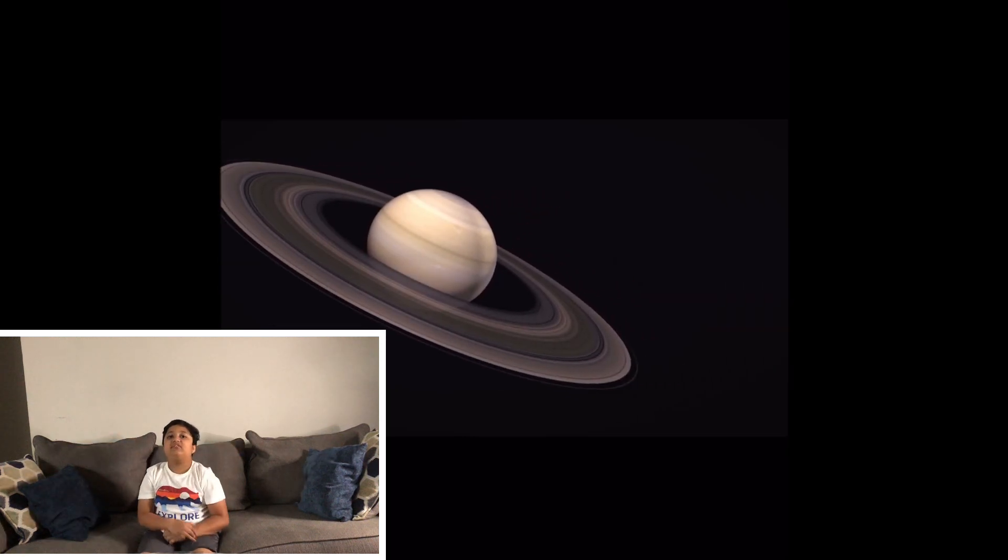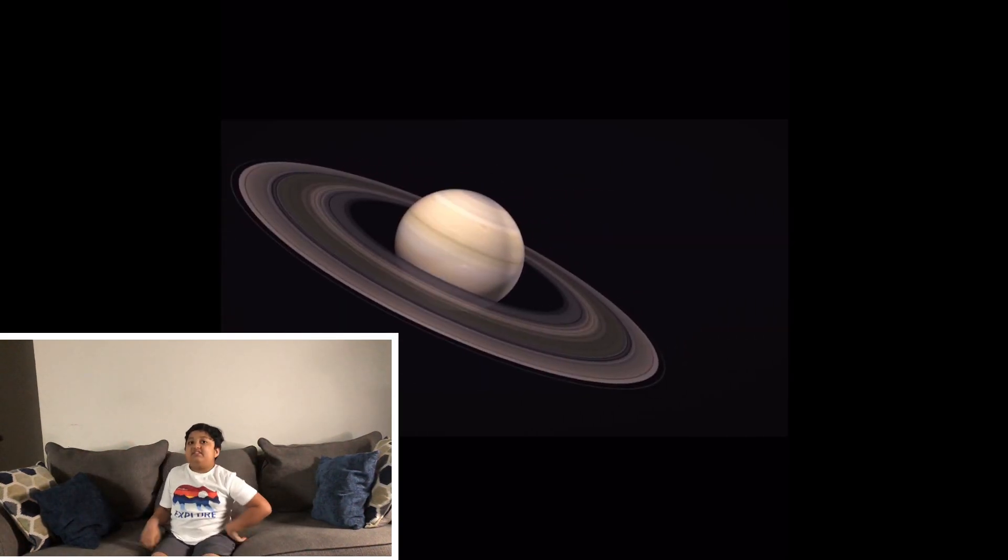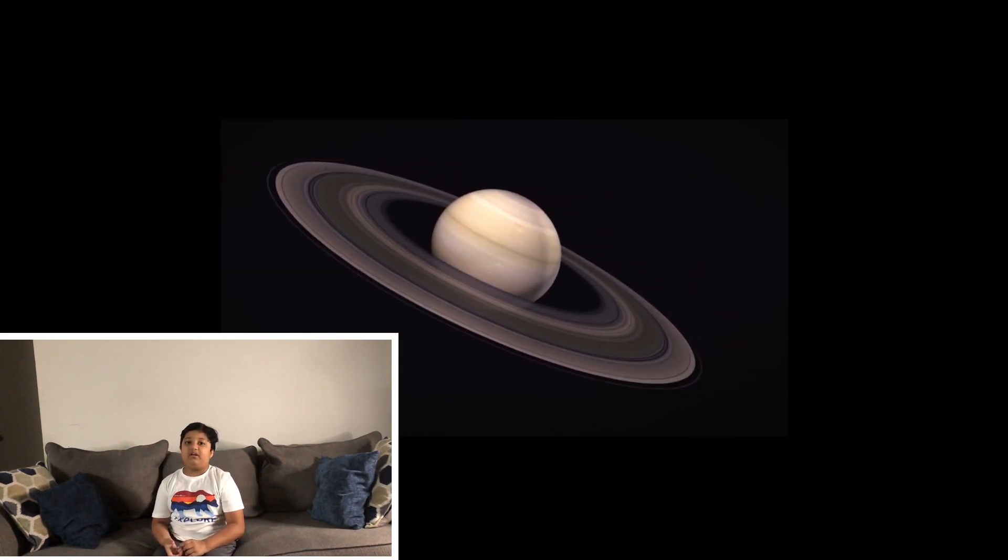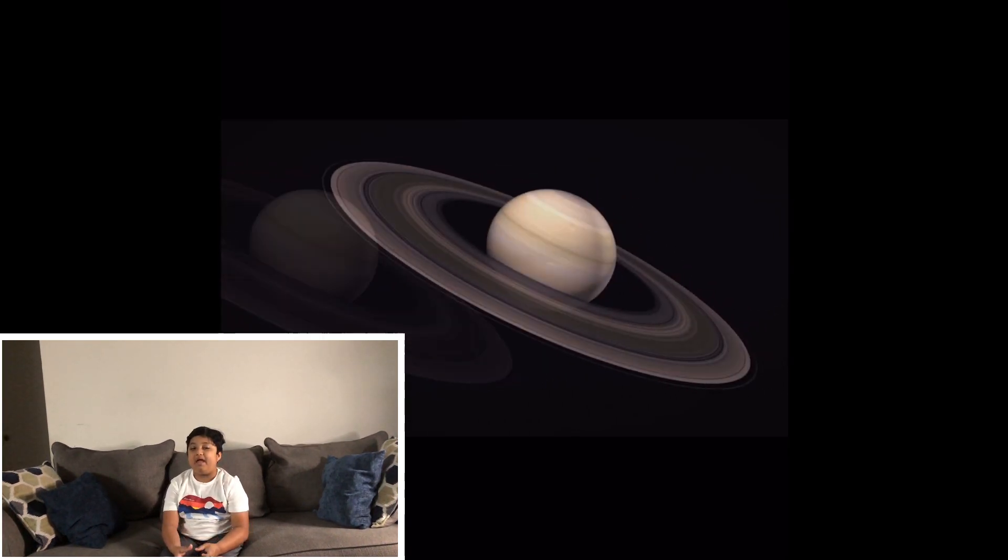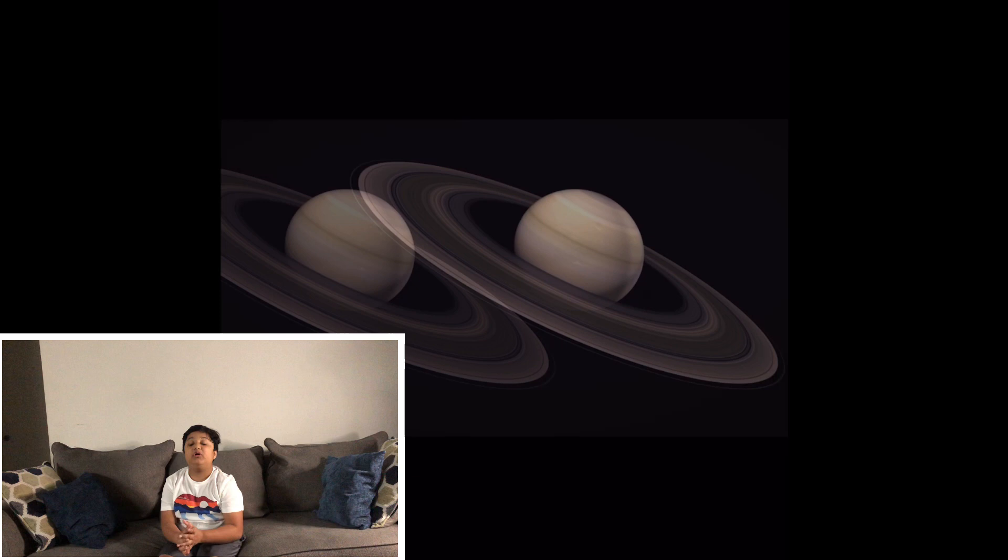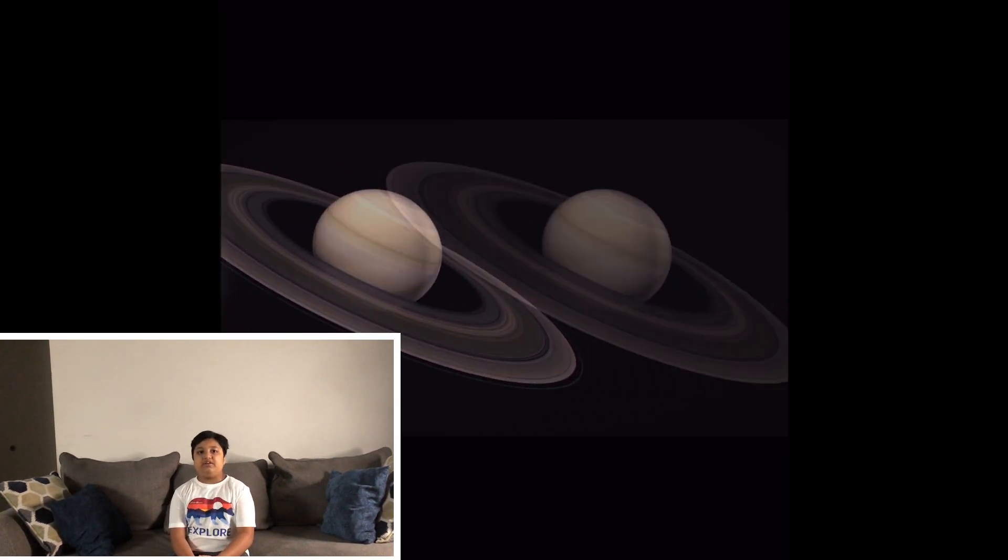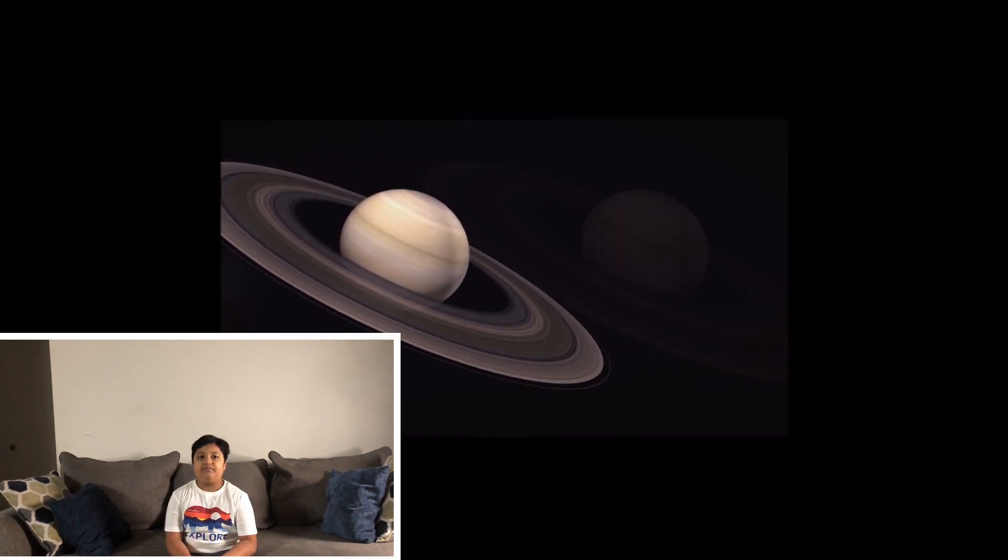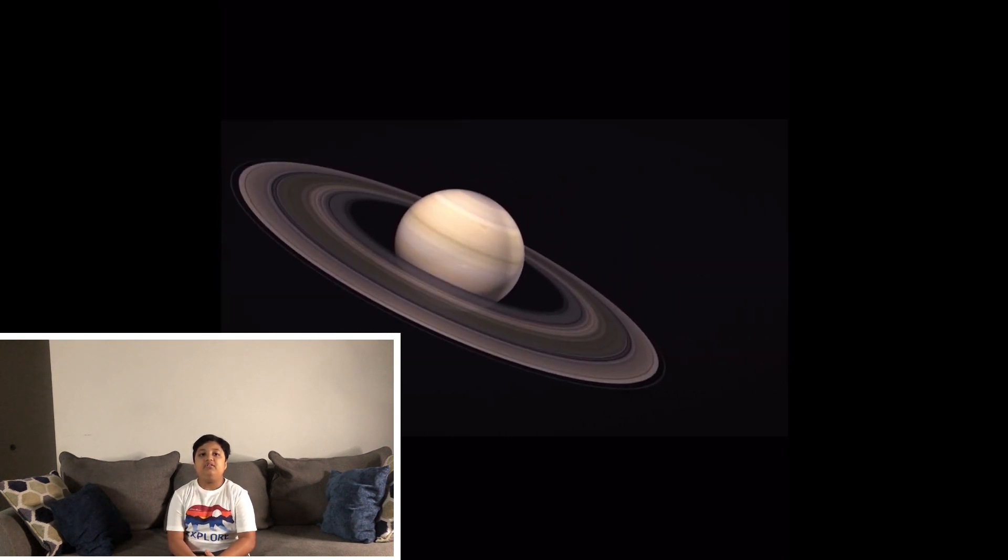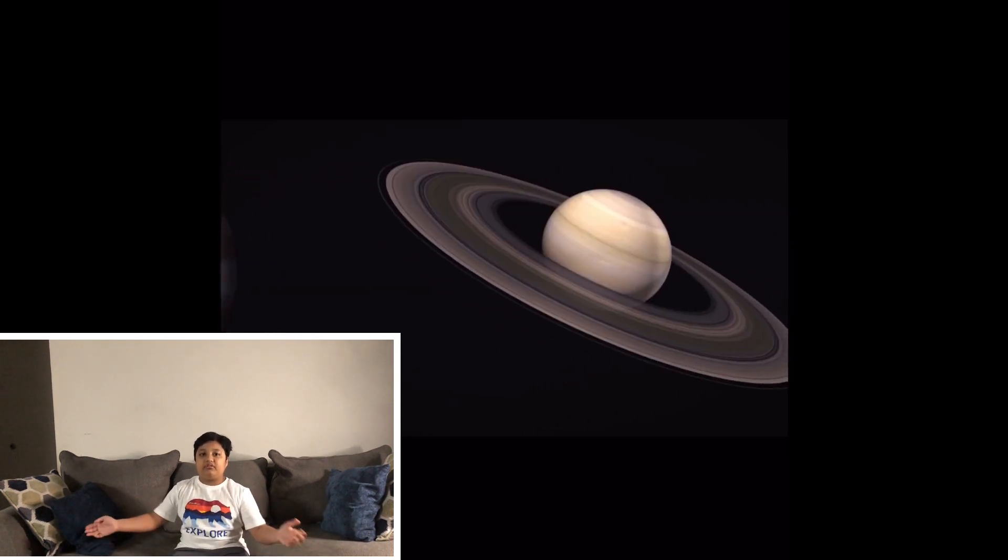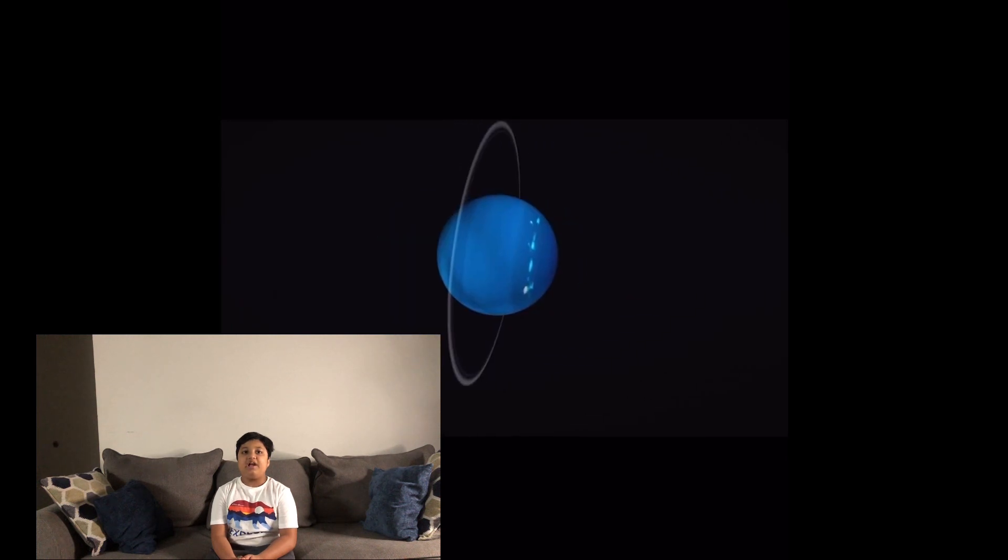Saturn has 60 moons orbiting it. Some are larger than the planet Mercury. Saturn is the farthest planet from the Sun that can be seen from a telescope from Earth.